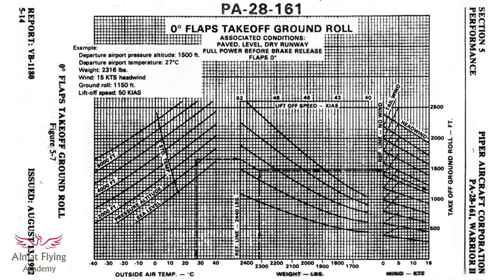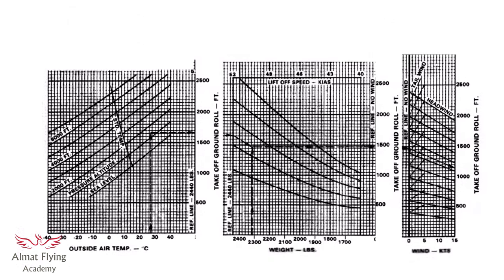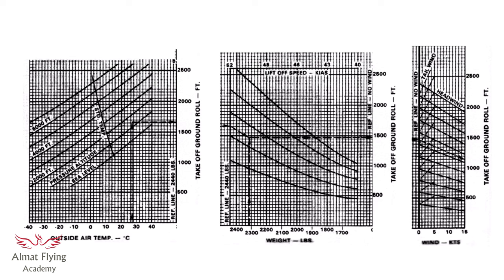Our example performance graph is for a typical PA28161 Warrior II. At first glance it can look a bit daunting, but it really isn't complicated. It's just a way of inputting multiple data points to produce a useful outcome, in this case take-off ground roll distance. The graph itself only looks confusing because it's actually three graphs that have all been put together back to back. We're now going to look at each section individually to better understand them before joining them back together again later on.